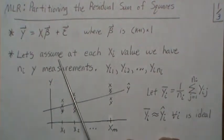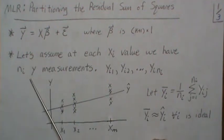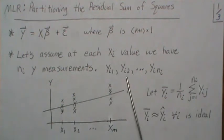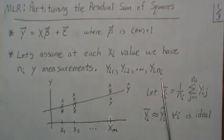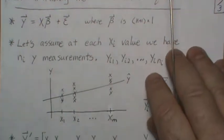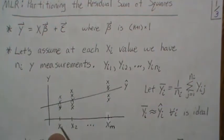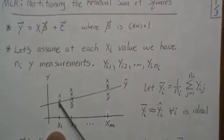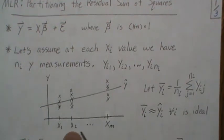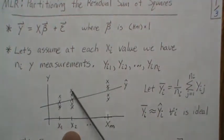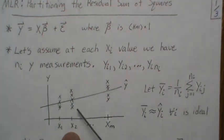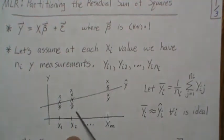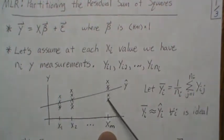At each x_i value we have n_i y measurements: y_{i1}, y_{i2}, up to y_{i,n_i}. Pictorially, at x_1 we have n_1 measurements: y_{11}, y_{12}, y_{13}, up to y_{1,n_1}. At x_2 we have n_2 measurements, and they don't have to be the same. We call them y_{21}, y_{22}, y_{23}, up to y_{2,n_2}. And for the m-th x we have n_m measurements.